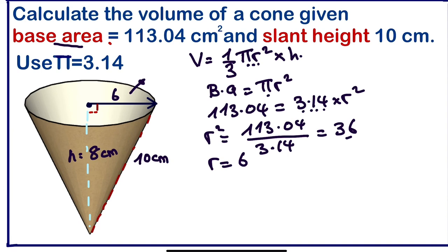Now we have the height, so we can move further to calculate the volume. The volume equals one-third times the base area, which is 113.04, times the height which is 8. If we simplify these, we are going to get 301.44 centimeters cubed.